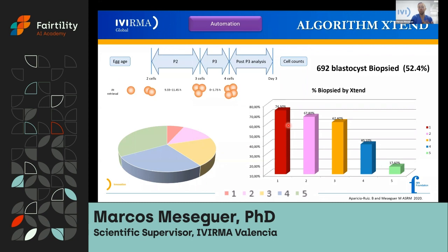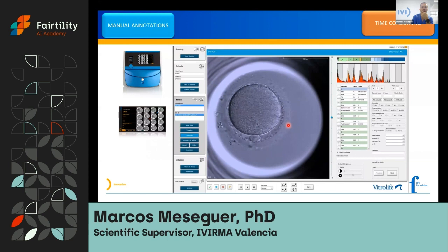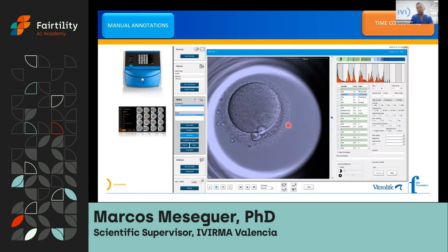We also looked at the performance of this system for embryos in our PGTA program with biopsy. If the embryo was classified as one, two, or three, there was a higher chance of being biopsied — compared to five, where only 70% were biopsied — showing a big difference from 74% down to 17% across categories. Embryologists also have a lot of curiosity. With manual annotations, we've been exploring parameters that may provide new insights into embryo development ever since we introduced time-lapse in 2010.